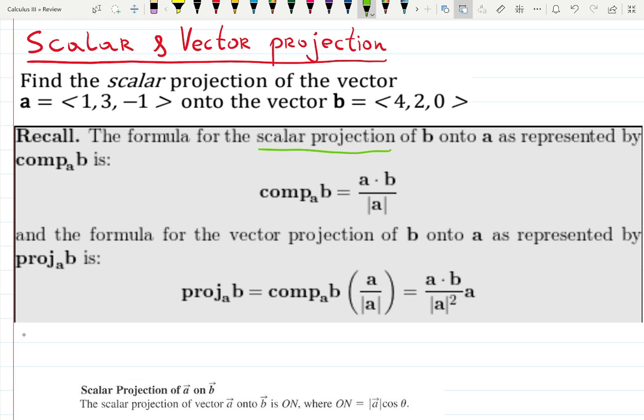A scalar projection was denoted as comp or component of B onto A will be a dot product A times B, all of these are vectors, over the magnitude of A, the size of A.